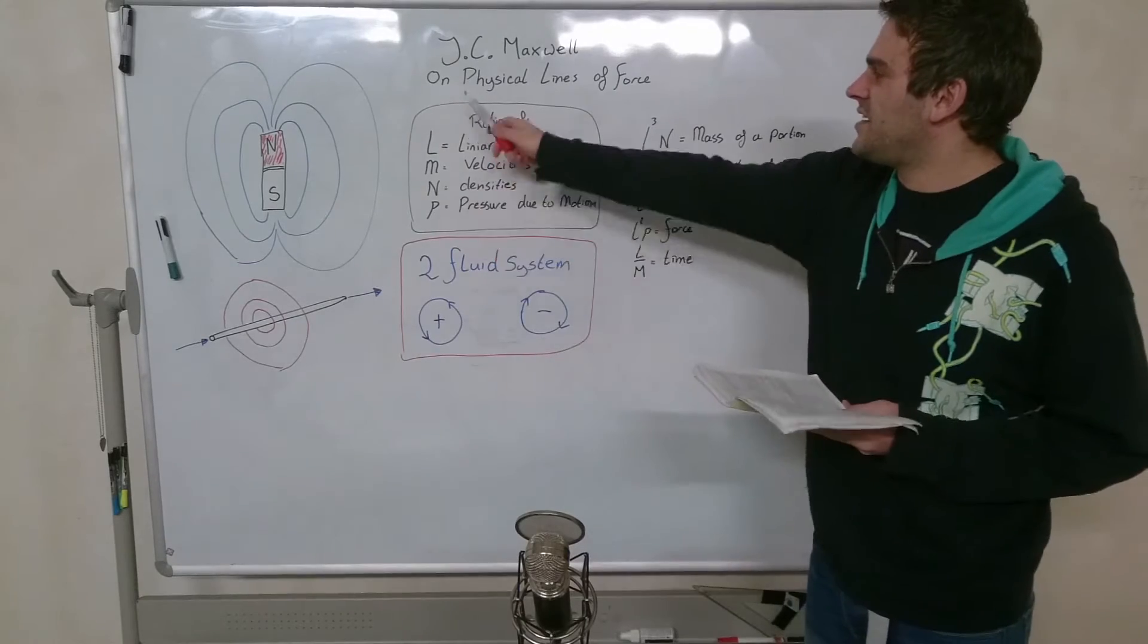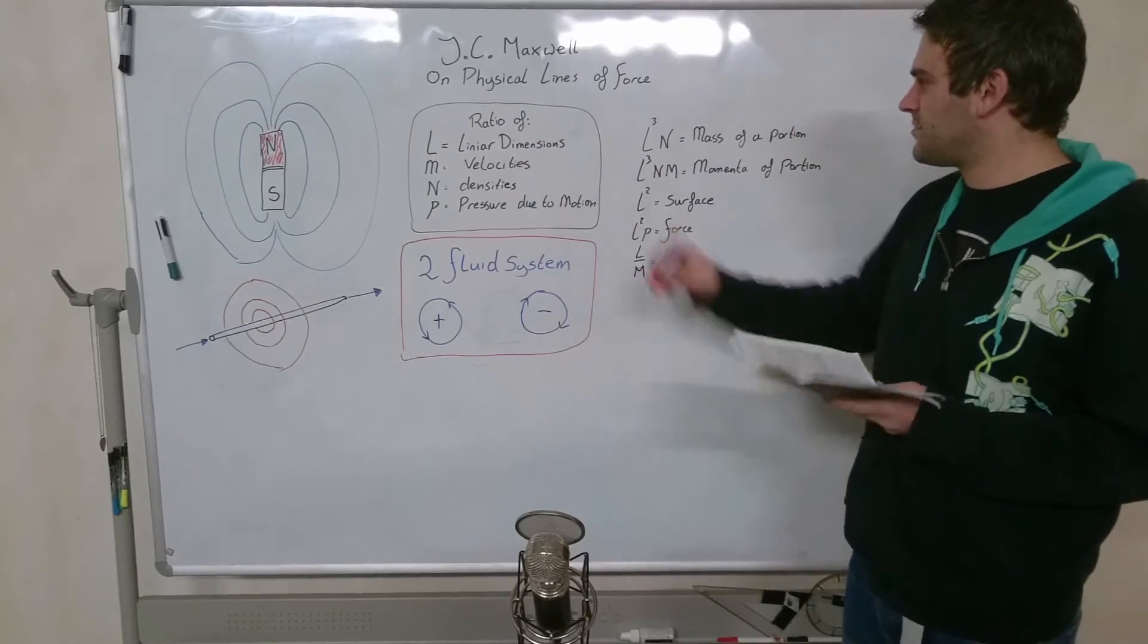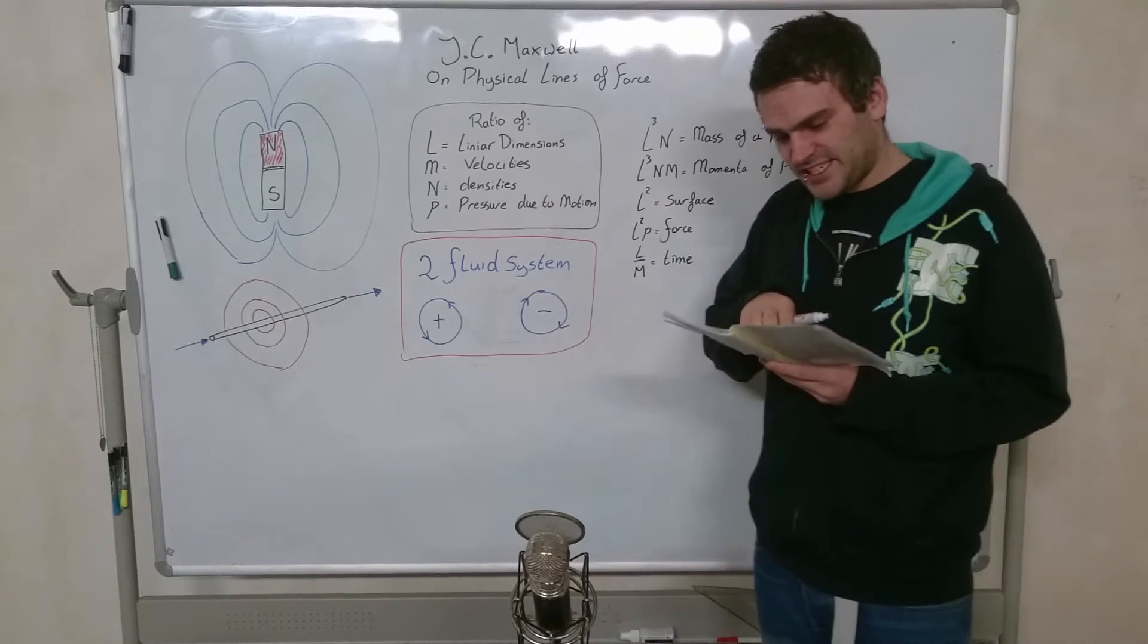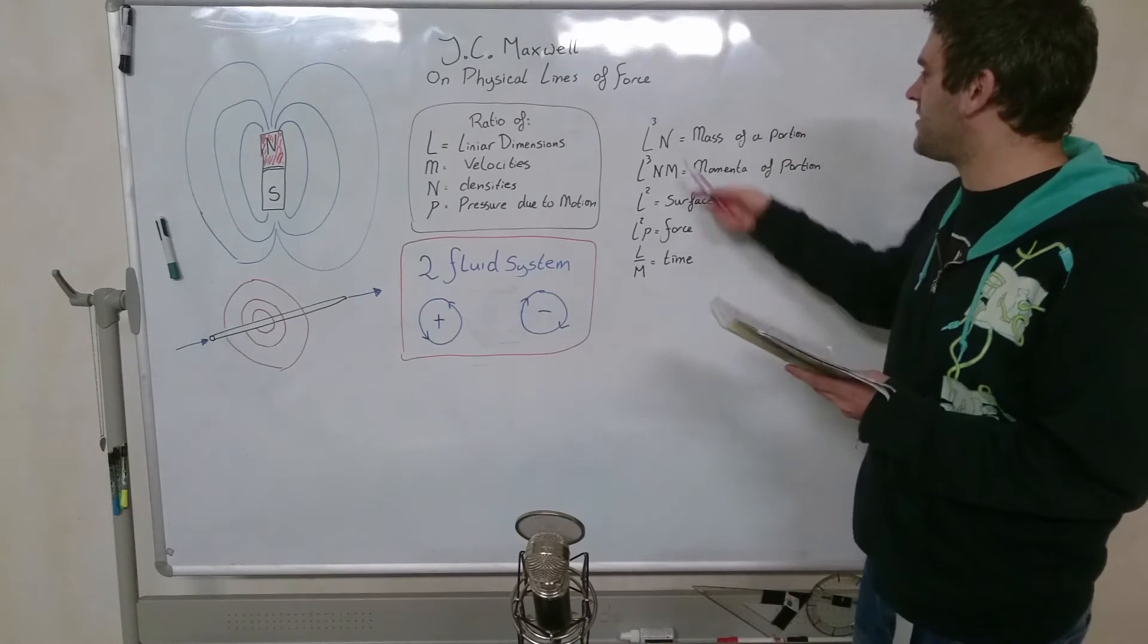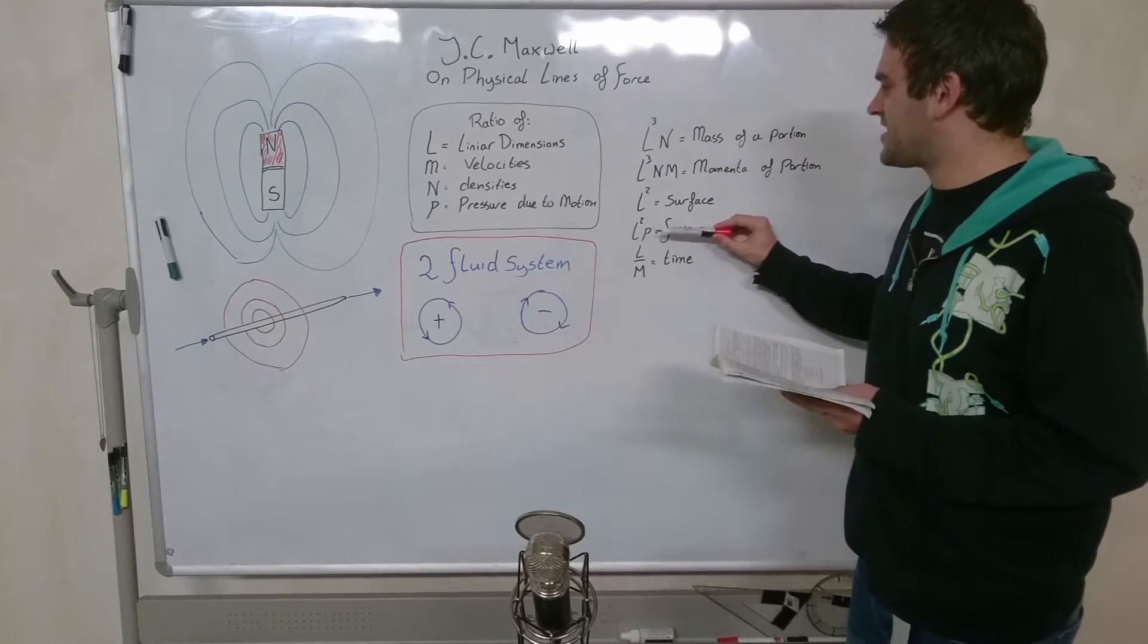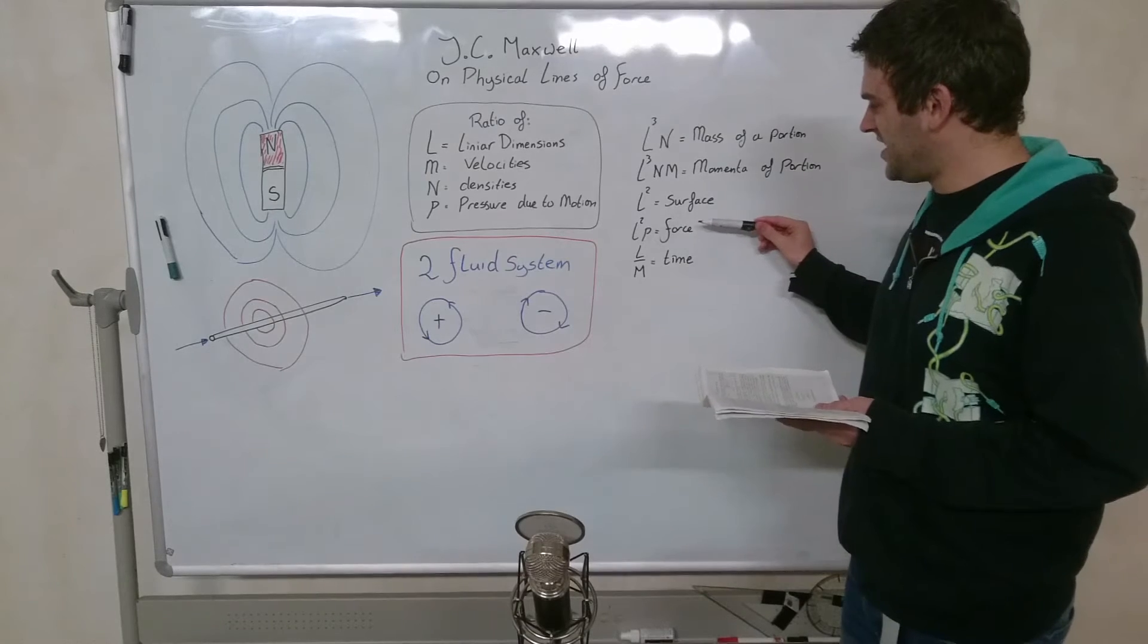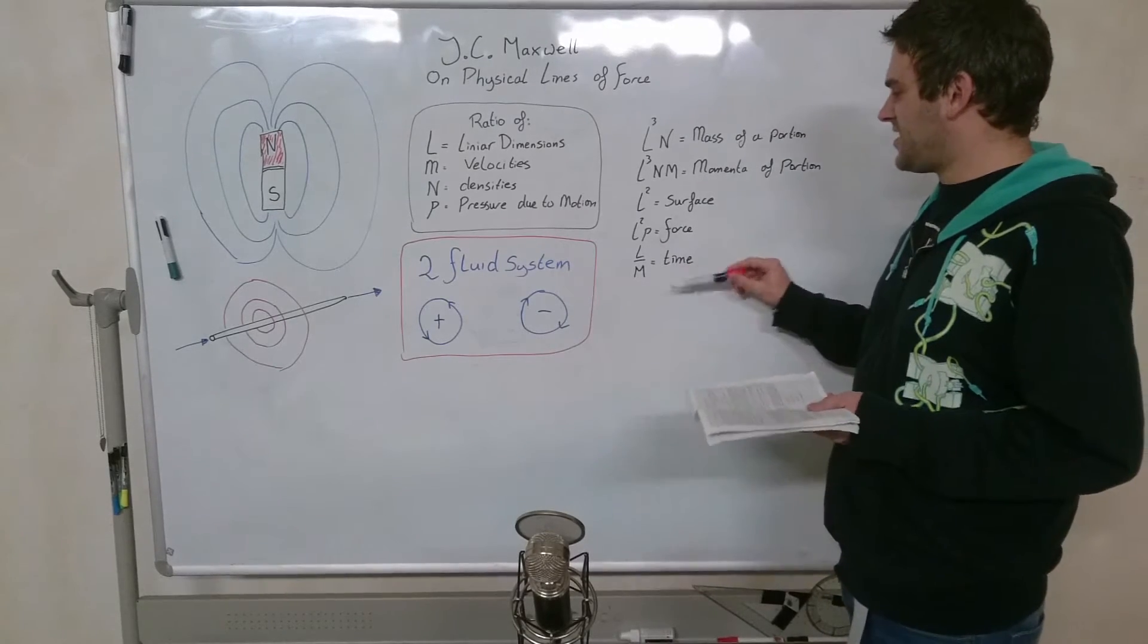If L, M, N, and P are known as the linear dimension, velocity, density, pressure due to motion, Maxwell says then the ratio of masses of corresponding portions will be L cubed over N. Okay, that's what we said before. So L squared times a pressure gives us a force and a length divided by a velocity gives us a time. So if we combine these two ideas...